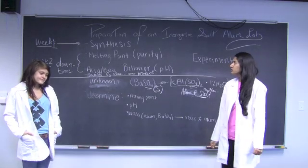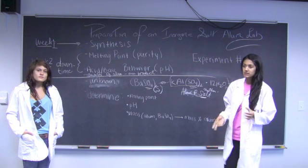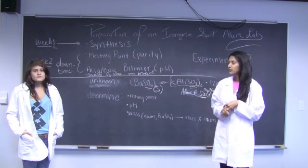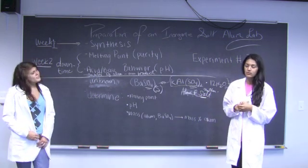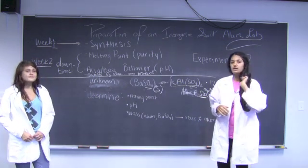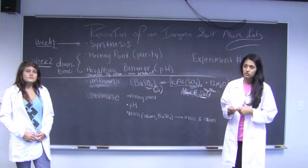Experiment number two is a preparation of alum, which is an inorganic salt. It's a double salt because it contains potassium and aluminum. In the first week, we'll be doing the synthesis of alum. What is synthesis? Synthesis is a process that goes from reactants to products through several reactions or just one reaction.